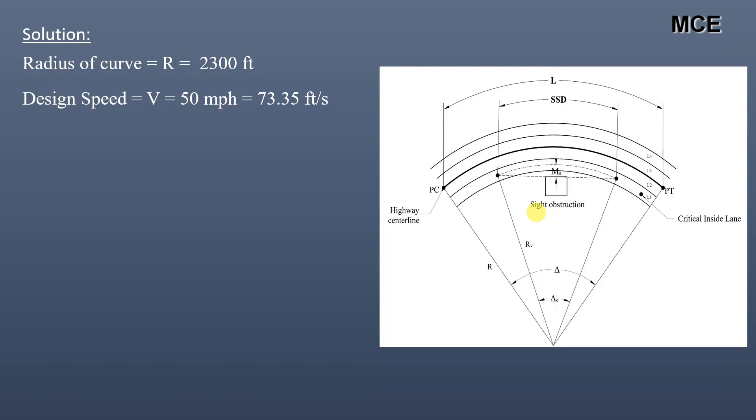Since the road has four lanes of 10 feet, the radius of the innermost lane will be equal to R minus 10 minus 10/2, which is equal to 2300 minus 15, which equals 2285 feet.